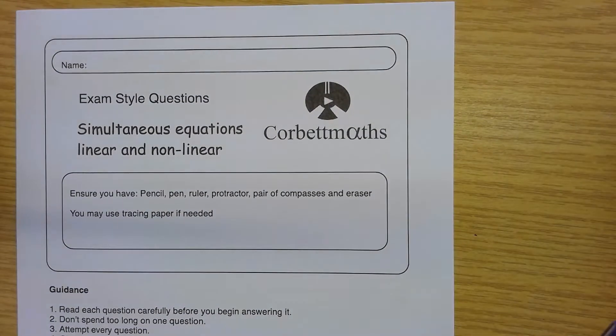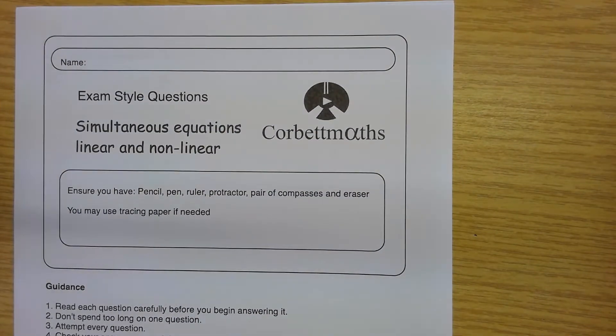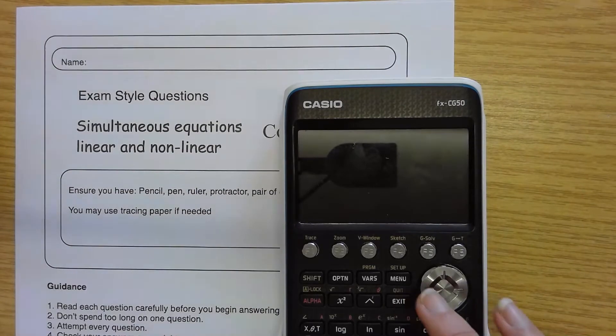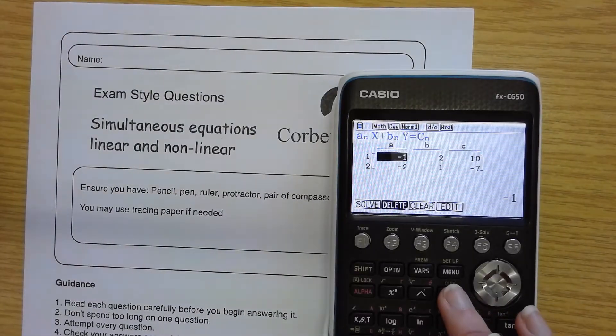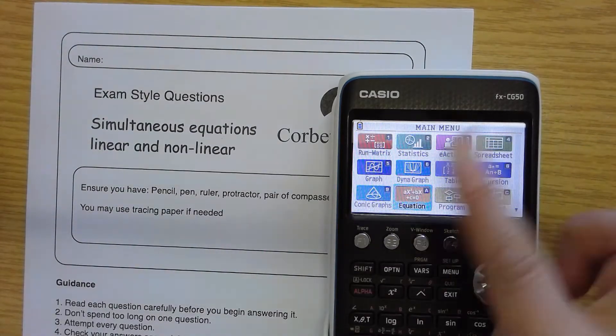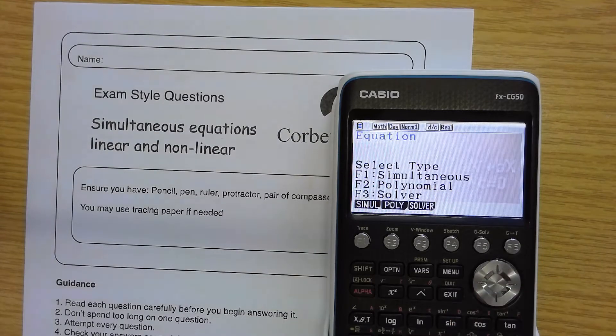This is a way of checking answers. It does not secure all of the method marks for you. Previously, in my previous video on simultaneous equations, if I turn the calculator on and press exit to go back, we were in the equation option. On menu, that was 5 for equation, which is fantastic.